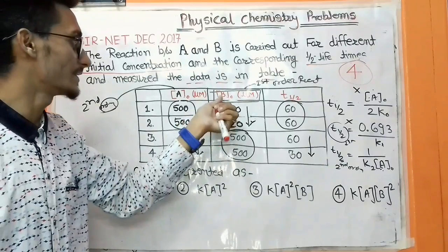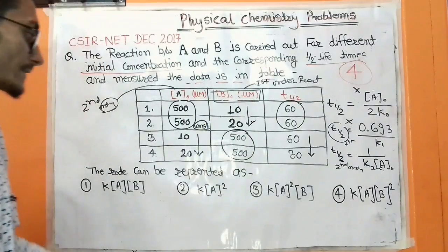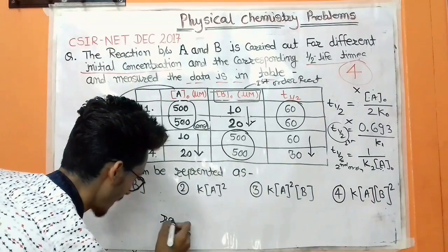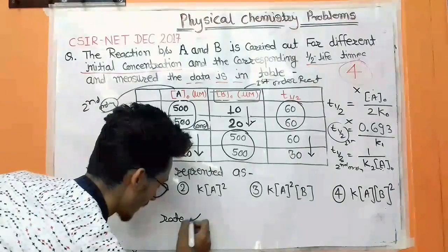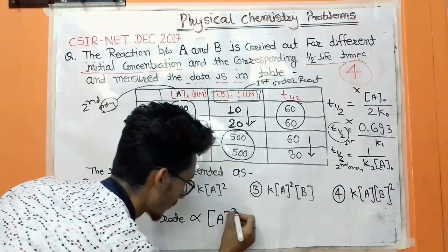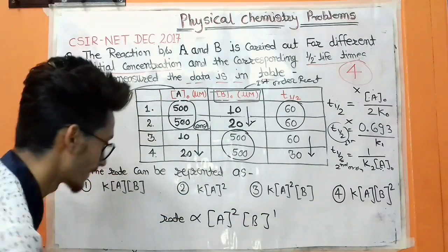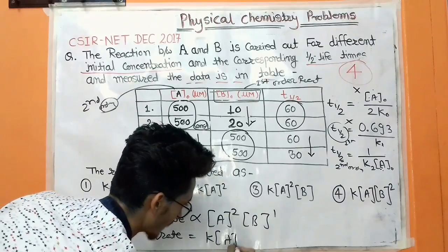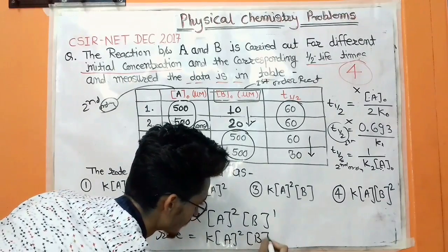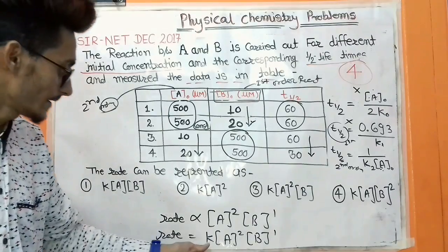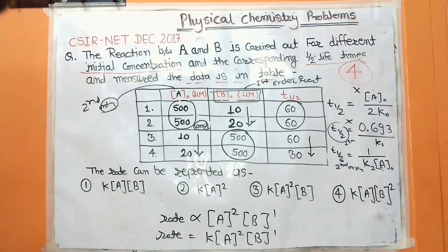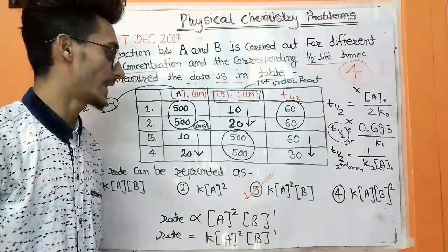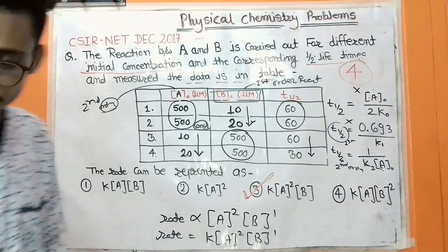So A is second order and B is first order. The rate can be represented as rate = k[A]²[B]¹. This corresponds to option C, the third option, which is the right answer.